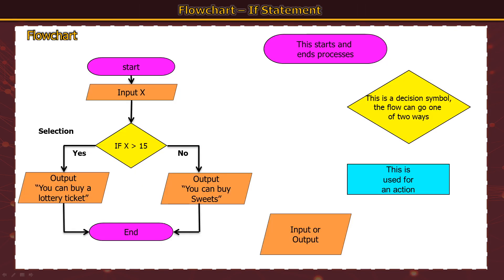The two types of algorithm you need to know are flowchart and pseudocode. I'm going to start with flowcharts because most people find these easier. In your exam you might see a question asking you to represent a problem as a flowchart or as pseudocode, or make a choice between the two. Make sure you read the question carefully because sometimes it specifies which one you must do. You need to be able to create both flowcharts and pseudocode.